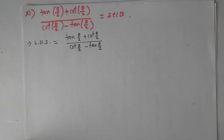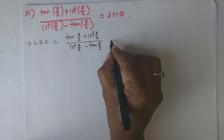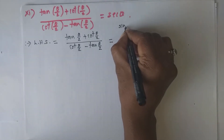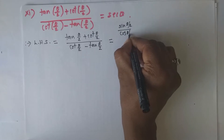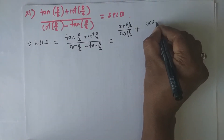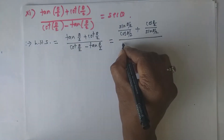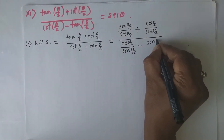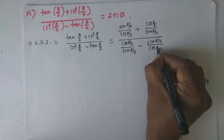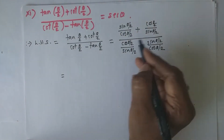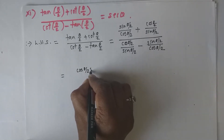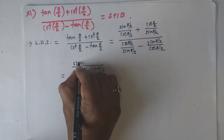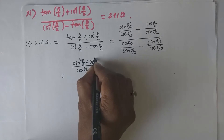The first problem is: (tan θ/2 + cot θ/2) / (cot θ/2 - tan θ/2) = sec θ. Write down the left hand side as it is. Since the right hand side has sec, I will convert tan and cot into sin and cos. So tan θ/2 = sin θ/2 / cos θ/2 and cot θ/2 = cos θ/2 / sin θ/2. In the numerator, take LCM = cos θ/2 · sin θ/2, and cross multiply to get sin²(θ/2) + cos²(θ/2).